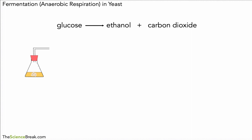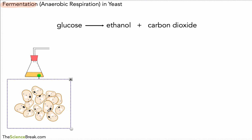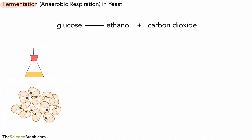Hello, welcome. Today we're looking at fermentation in yeast, which is another way of talking about anaerobic respiration in yeast. If you've watched the previous video, you may remember that when we have anaerobic respiration in yeast we have this summary equation: glucose reacts to produce ethanol and carbon dioxide. This is respiration without oxygen. Yeast is a microorganism that carries out anaerobic respiration — it can do aerobic respiration as well, but here we've made it so it can only do anaerobic by stopping any oxygen from getting in.